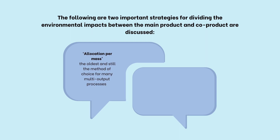Two important strategies are discussed. First, allocation per mass, which is the oldest and still the method of choice for many multi-output processes. Second, system expansion, which is the recommended method by ISO 14044.